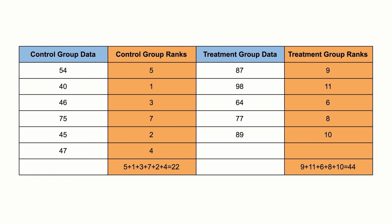In this example, the p-value of 0.0087 indicates there is a significant difference. So in this case, we were able to find a statistically significant difference without having to assume a distribution for each group.